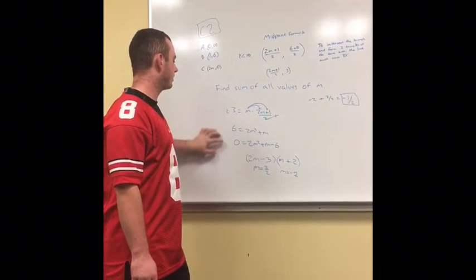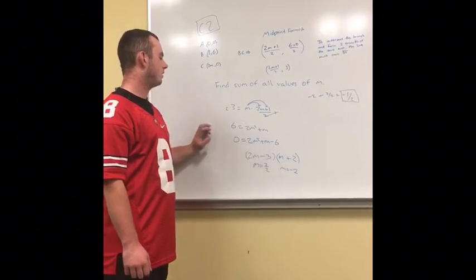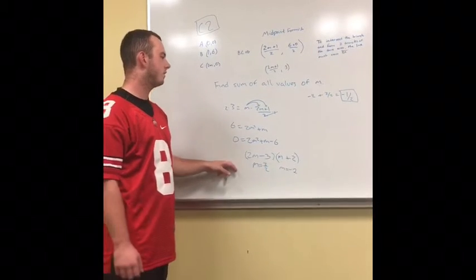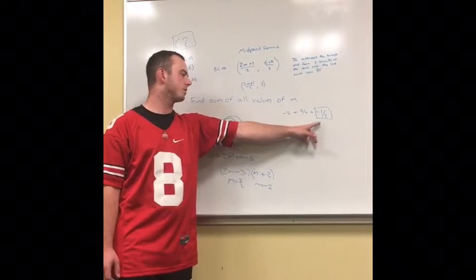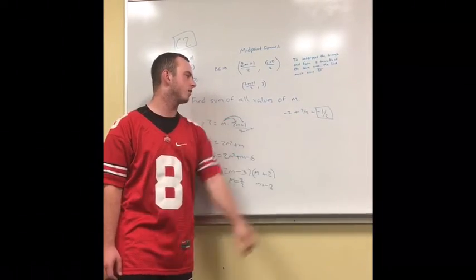Then you subtract the 6 back over to get 0, and then you factor it. After you factor it, you add up the two values you get, and the sum of M, the possible M values is, for mine, negative 1 half, and that's your answer.